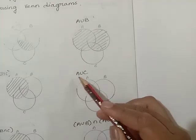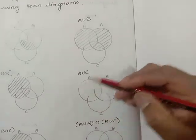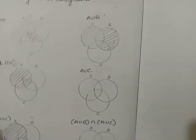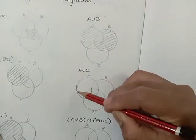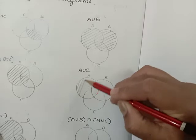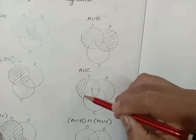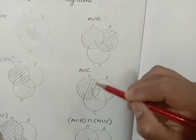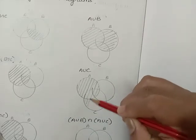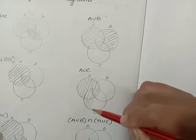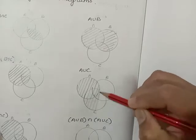Now, A union C. A union C means we need the circle of A and the circle of C, not B. This is A union C.